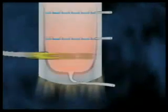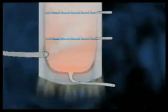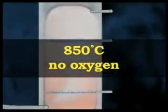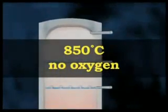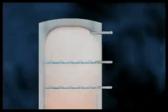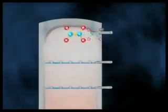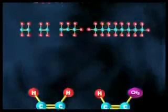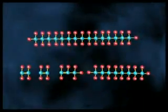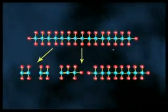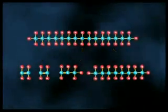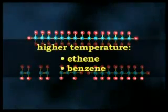In thermal steam cracking, the hydrocarbon is diluted with steam and then briefly heated in a very hot furnace at around 850 degrees Celsius without oxygen. The reaction is only allowed to take place very briefly. Light hydrocarbons break down to lighter alkenes including ethene, propene and butene, which are useful for plastics manufacturing. Heavier hydrocarbons also give products rich in aromatic hydrocarbons and hydrocarbons suitable for petrol or diesel. Higher cracking temperature favours the production of ethene and benzene.